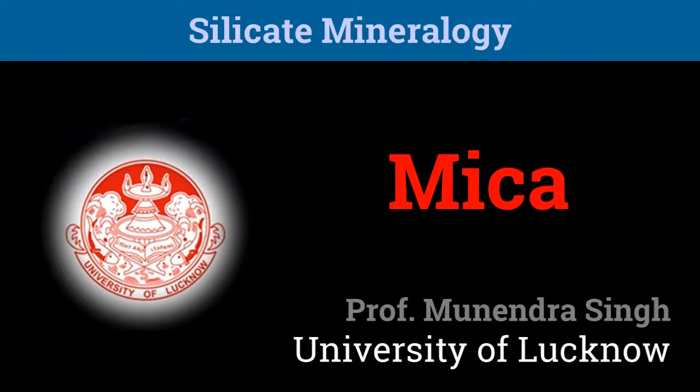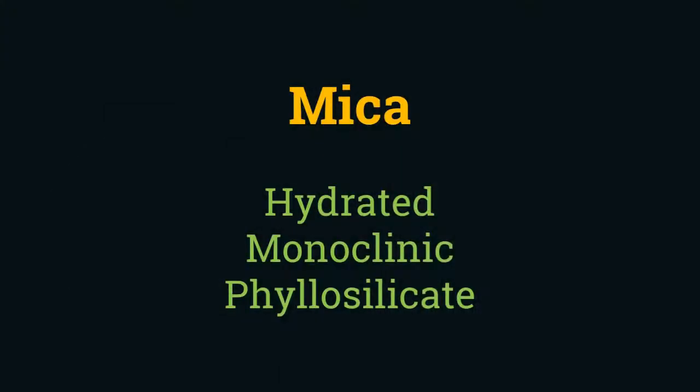Welcome folks to the presentation on mica. Mica is a group of hydrated monoclinic phyllosilicates, which means that they always contain hydroxyl iron. They crystallize in the monoclinic system and possess a sheet-like structure where the Si:O ratio is 2 to 5.